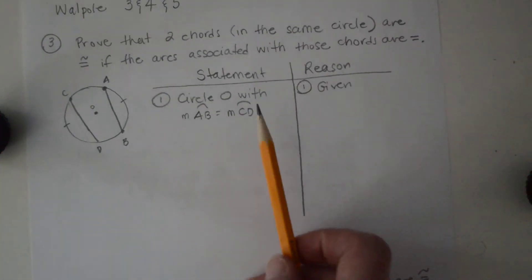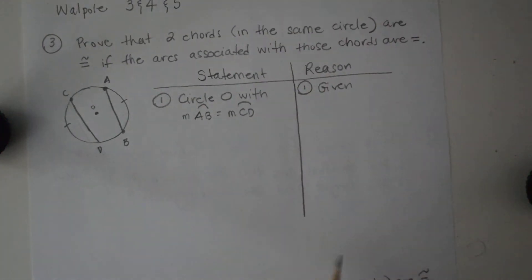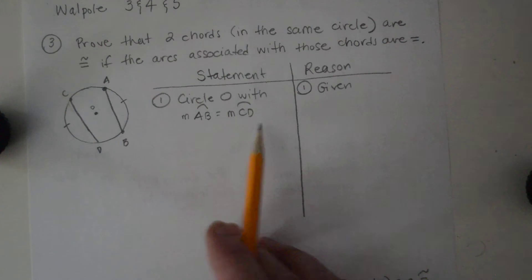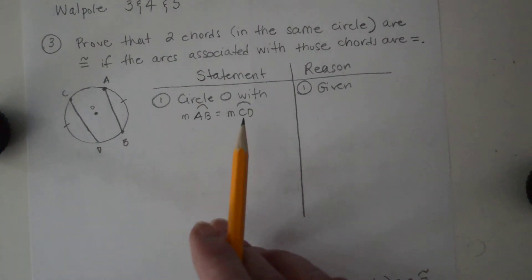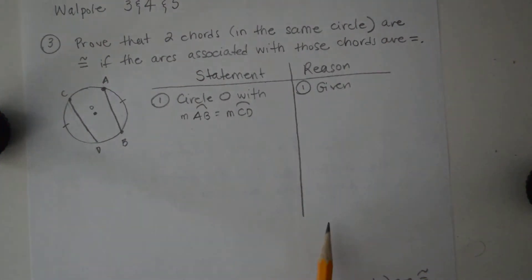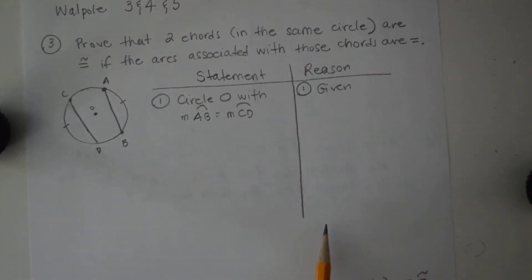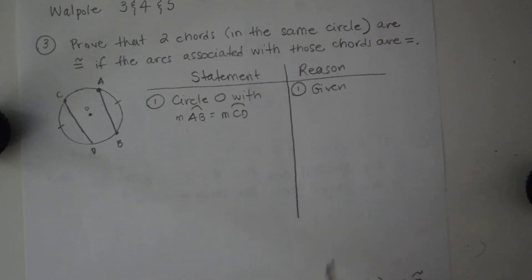Our given is circle O with the measure of arc AB equal to the measure of arc CD, and that's the given.